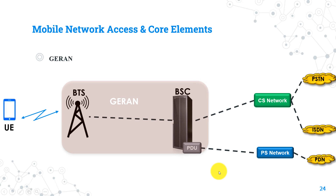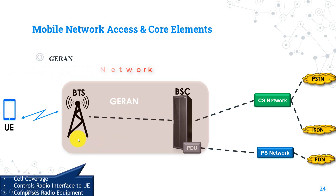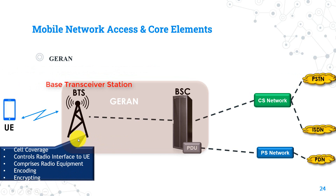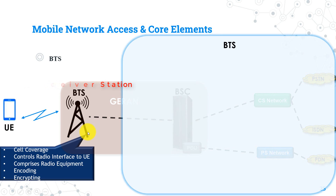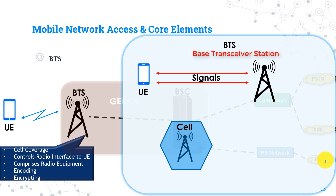Let's now talk in detail about the GERAN access part. GERAN is the 2G radio access part, an abbreviation for GSM EDGE Radio Access Network. It consists of BTS and BSC nodes. BTS stands for Base Transceiver Station. From the word transceiver, we can observe that this node is mainly concerned with sending and receiving signals with the user equipment. The BTS main function is coverage of the cell, so that any UE roaming in that cell is covered, meaning the UE connects to the mobile network through the BTS.